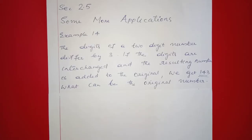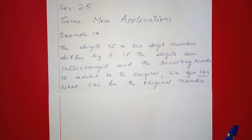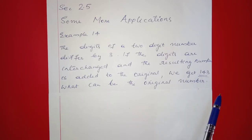Example 14. The digits of a two-digit number differ by 3. If the digits are interchanged and the resulting number is added to the original, we get 143. What can be the original number?